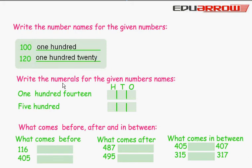Write the numerals for the given numbers name. One hundred fourteen - We write here 1, 1, 4.